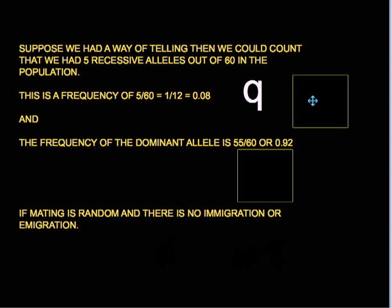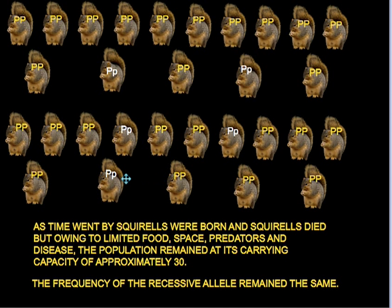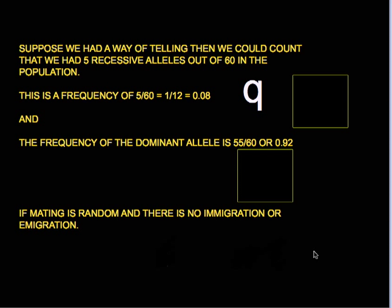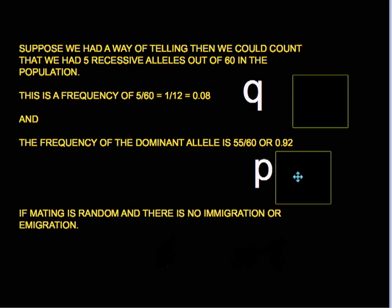The frequency of the recessive allele is referred to as q. Similarly, for the dominant allele, there are fifty-five out of sixty — that is, fifty-five big P alleles. Fifty-five out of sixty comes to 0.92. Adding 0.92 to 0.08 gives us 1. We call the frequency of the dominant allele p.